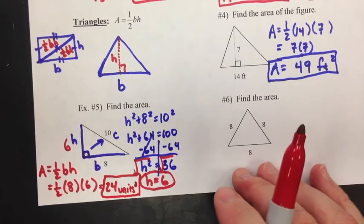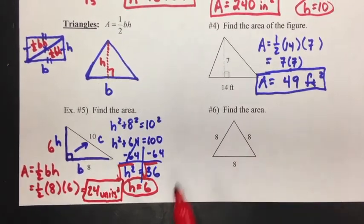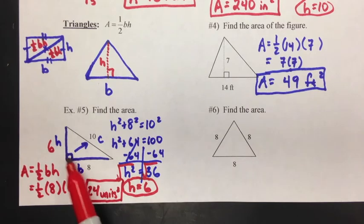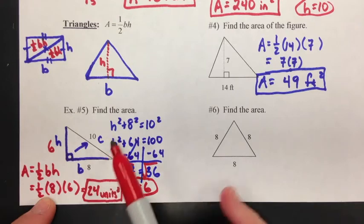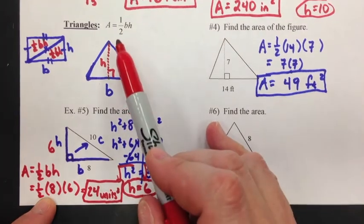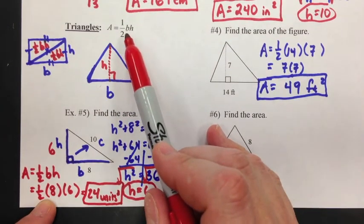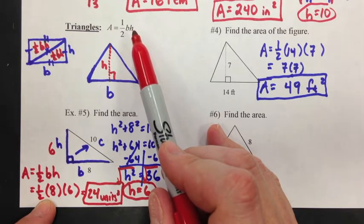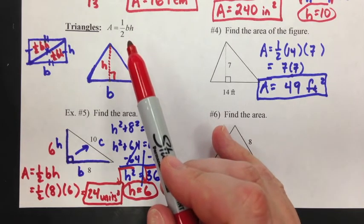In a lot of these problems, they're not going to give you all the information. They're going to make you find something first. So, that's why, if it's a triangle, you've got to know what the formula is. What do I need? A base and I need a height. If I don't have one, I've got to get one.